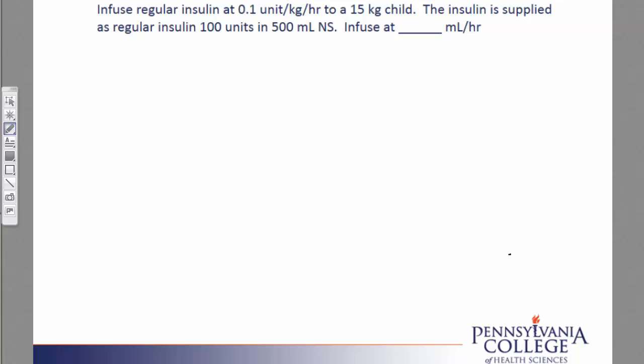In this problem we are asked to figure out an insulin dose based on the patient's weight. Let's take a look through the problem for important details. First, we see that regular insulin is to be infused at 0.1 units per kilogram per hour. We see the child's weight is given in kilograms, so that saves us a conversion. And we see that the insulin is supplied 100 units in 500 milliliters of normal saline. The question is asking us to figure out the milliliter per hour rate.